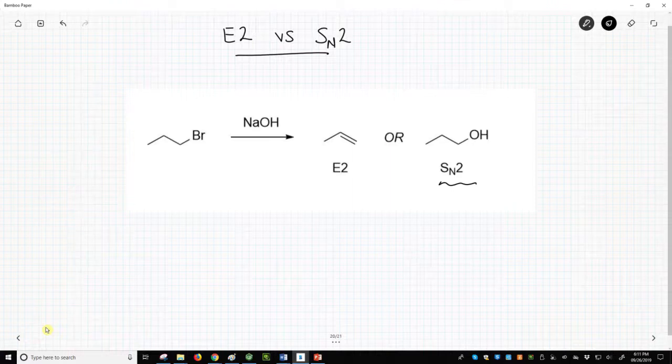You say that NaOH is a strong base that will do an E2 reaction to give an alkene product. To determine who is right, you both go into lab to perform the experiment and get an NMR of the product.